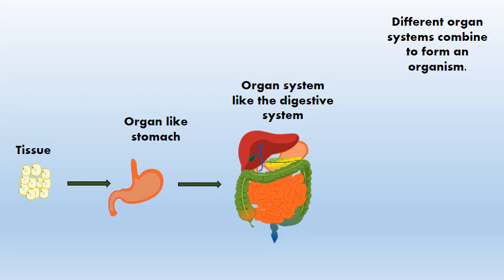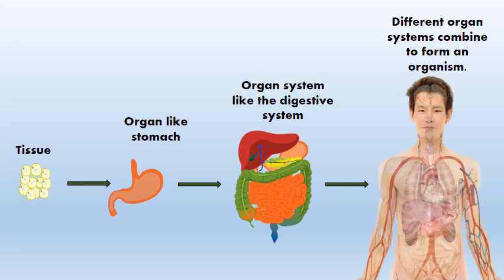Different organs that work together to carry out a specific process form an organ system, like the digestive system. Different organ systems combine to form an organism.